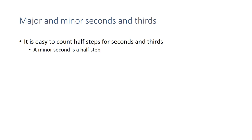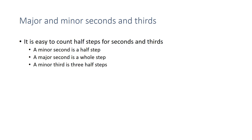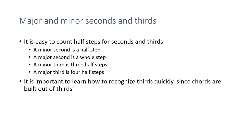If you're trying to figure out the quality of seconds and thirds, it's fairly easy to count the number of half steps they have. A minor second is the same as a half step, and a major second is the same as a whole step — two half steps. A third with three half steps is a minor third, and a third with four half steps is a major third. Counting one, two, three, or four half steps is not that much work.